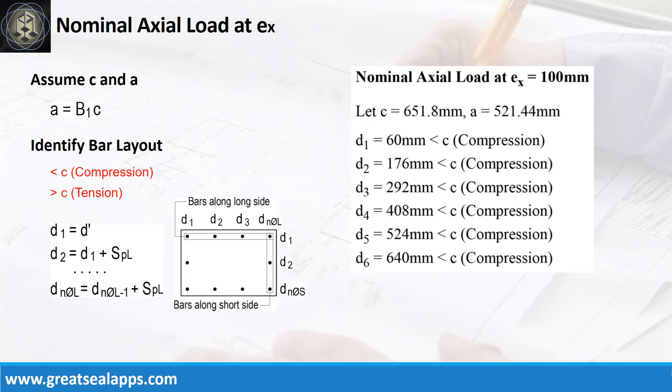D sub 1 equals 60 mm, less than neutral axis — compression. D sub 2 equals 176 mm, less than neutral axis — compression. D sub 3 equals 292 mm, less than neutral axis — compression. D sub 4 equals 408 mm, less than neutral axis — compression. D sub 5 equals 524 mm, less than neutral axis — compression. D sub 6 equals 640 mm, less than neutral axis — compression.